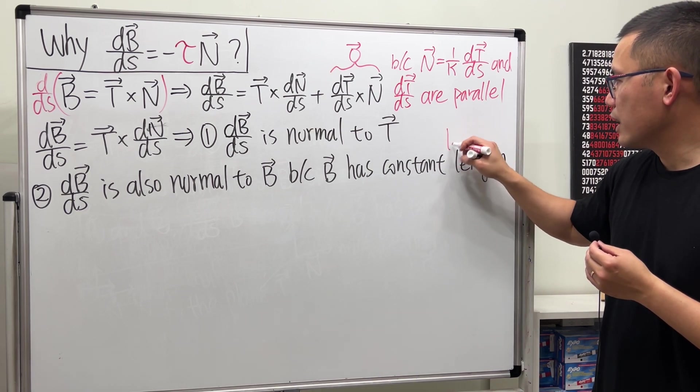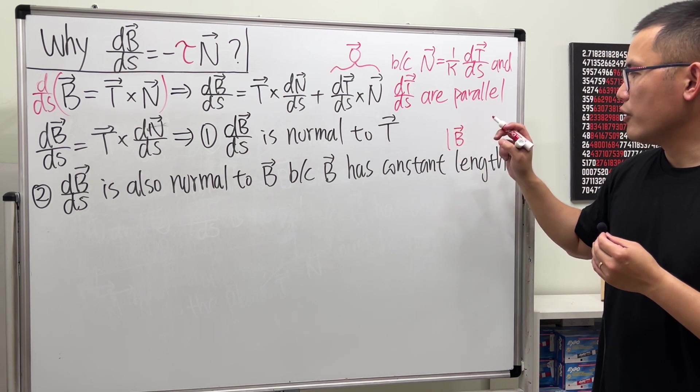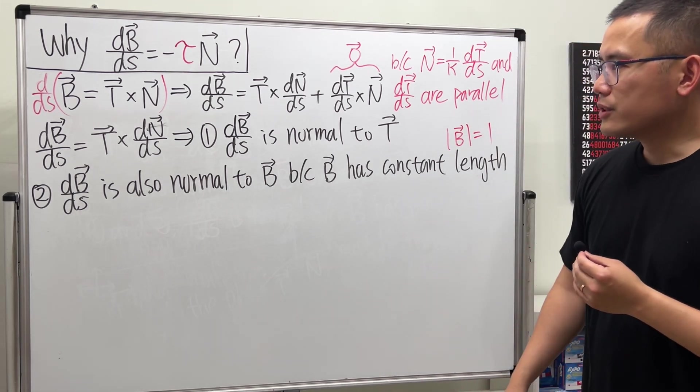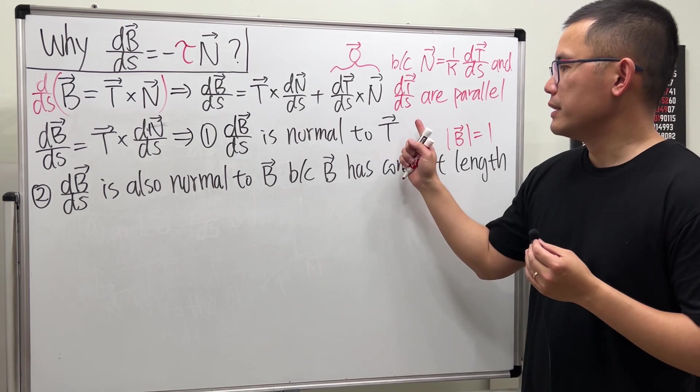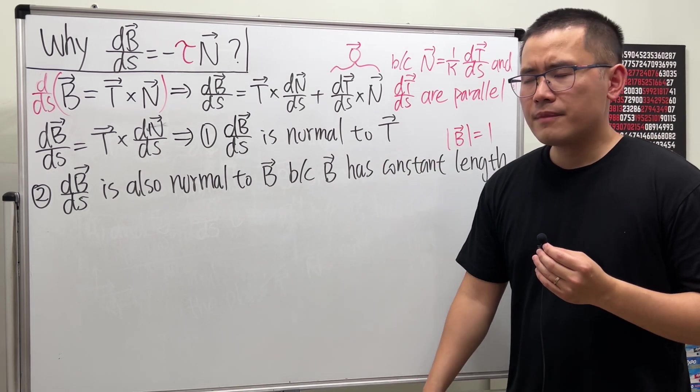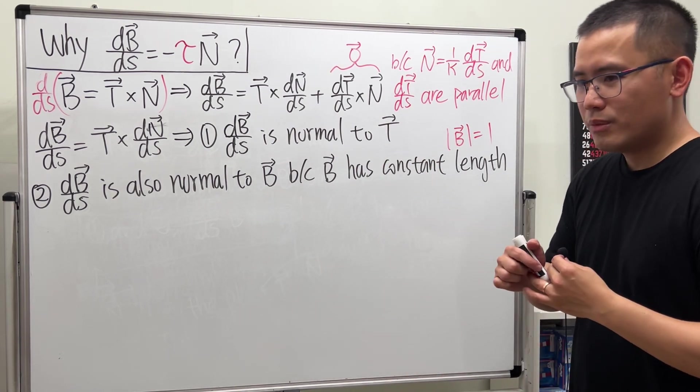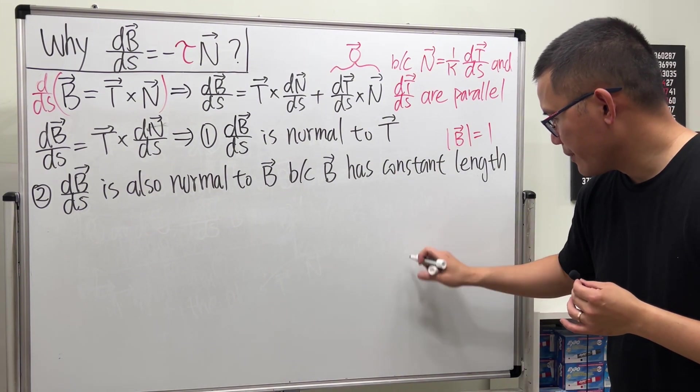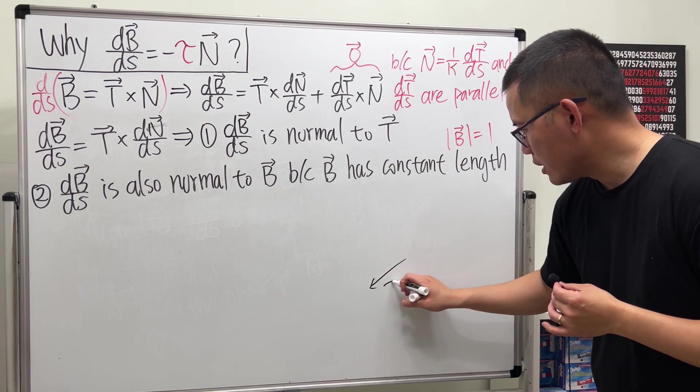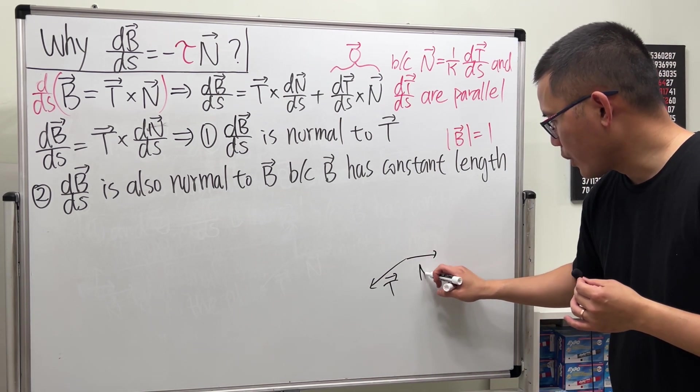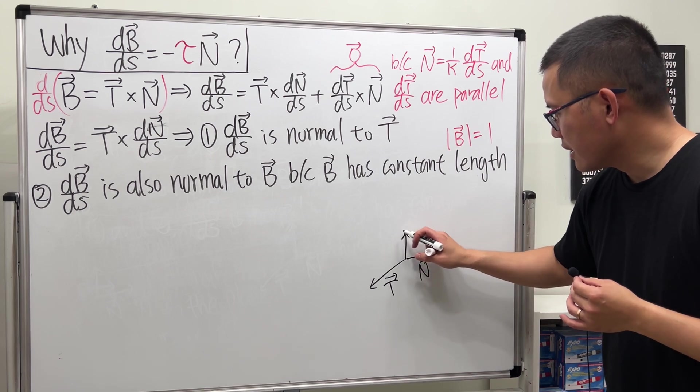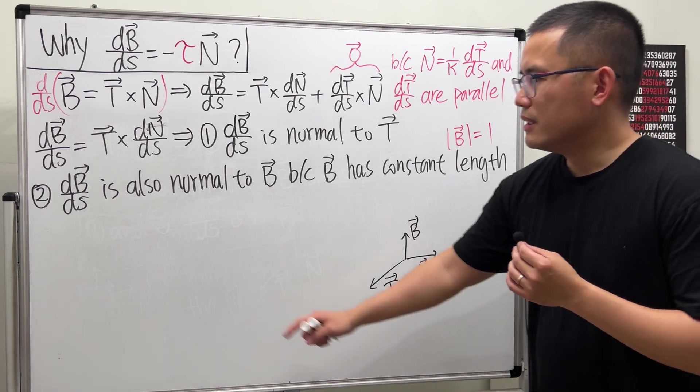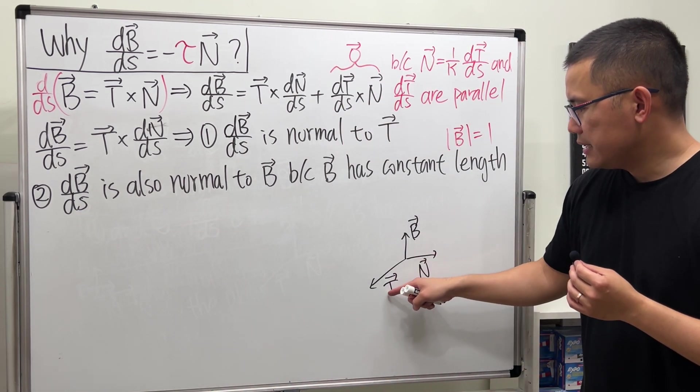And of course, I can indicate that the length of B is always equal to 1 because it's a unit vector. So that means dB/ds is normal to both T and B. And what's the connection between T and B? Well, remember we have the T and B, right? So let me just take a look right here. So here, let's say this is where T is pointing. And let's say here is where N is pointing. And let's say here is B.